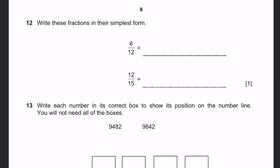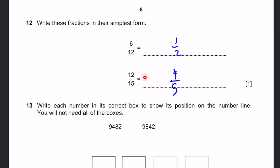Question 12. Write these fractions in simplest form. 6 over 12 equals 1 over 2 — we divide both by 6. And 12 over 15 equals 4 over 5 — we divide both by 3.